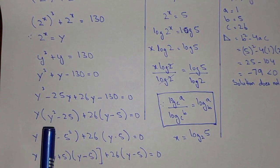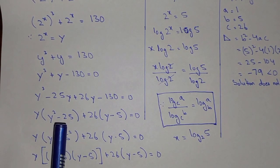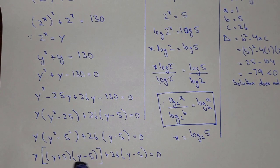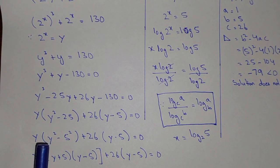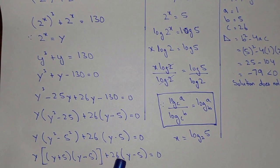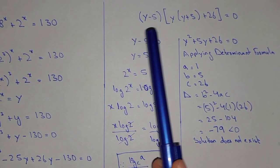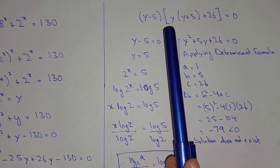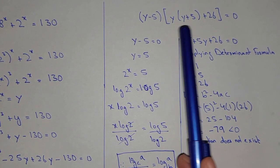Taking y common from the first two terms and 26 common from the last two, we get y into (y squared minus 25) plus 26 into (y minus 5) equals 0. We can write y squared minus 25 as y squared minus 5 squared, then apply the property a squared minus b squared equals (a plus b)(a minus b), giving us y(y plus 5)(y minus 5) plus 26(y minus 5) equals 0.